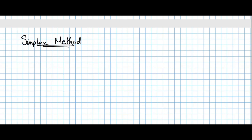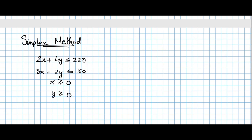We can refer to our older problem which we just addressed — not the network flow problem, but the general problem we were looking at as an example. Writing it down again: we have 2x + 4y ≤ 220, 3x + 2y ≤ 150, x ≥ 0, y ≥ 0, and the objective is to find the maximum of x + y.